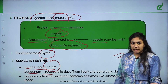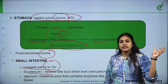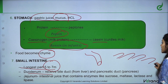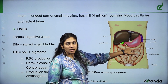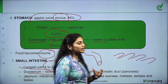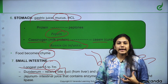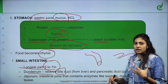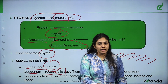The duodenum is attached to the pancreas and liver. The liver duct — a tube — and the pancreatic duct are attached with liver and pancreas. The liver produces something called bile — bile juice. The pancreas secretes pancreatic juices through the pancreatic duct into the small intestine.